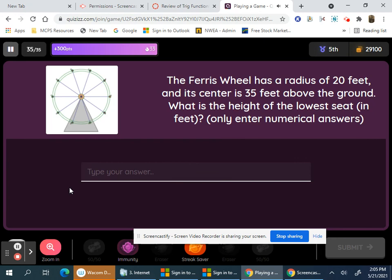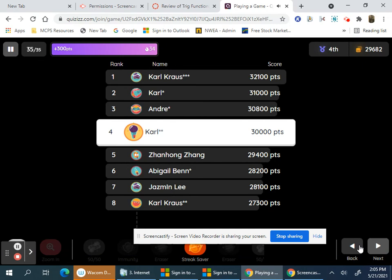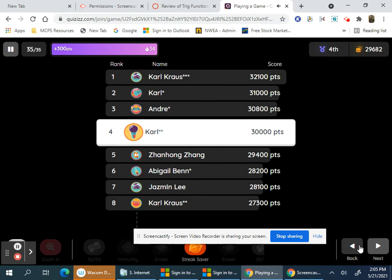And the ferris wheel, what's the height of the lowest seat? Would be 35 minus 20, would be 15. So I missed that one question because of the period there, but I guess I got a redemption there.